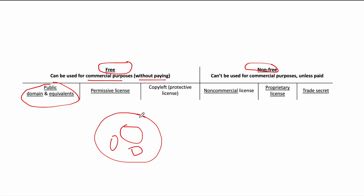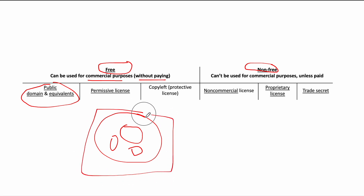Copyleft is the one which is a little restrictive — it is free but restrictive, meaning that if you have used a copyleft license then you would have to make your product also copyleft. You would have to retain the license. So if you use a copyleft which was open source, the end product you make out of it will also be open source.